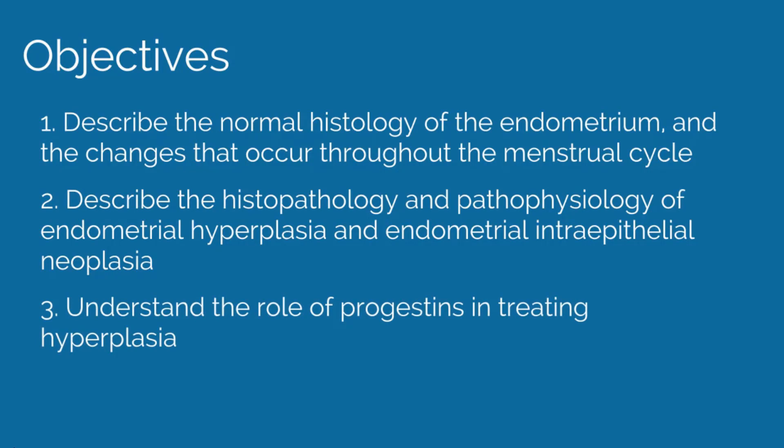To review the normal menstrual cycle and the hypothalamic-pituitary-ovarian axis, please see the APCO educational topic number 45 on normal and abnormal uterine bleeding, number 54 on endometrial hyperplasia and carcinoma, and the APCO basic science video on the HPO axis.